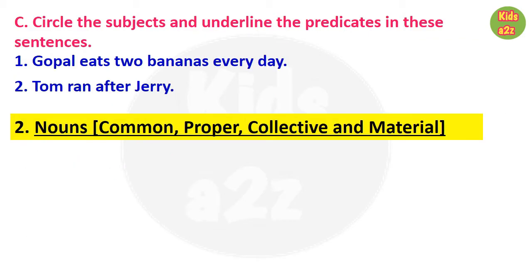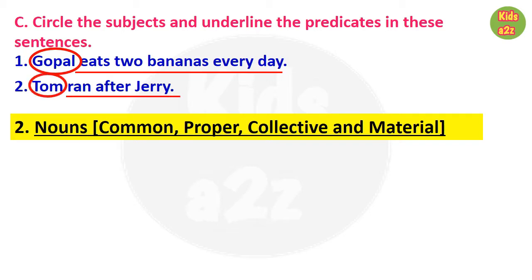Now for some questions and answers. First: 'Gopal eats two bananas every day.' Here the subject is 'Gopal' and the predicate is 'eats two bananas every day.' For the second question, the subject is 'Tom' and the predicate is 'ran after Jerry.'